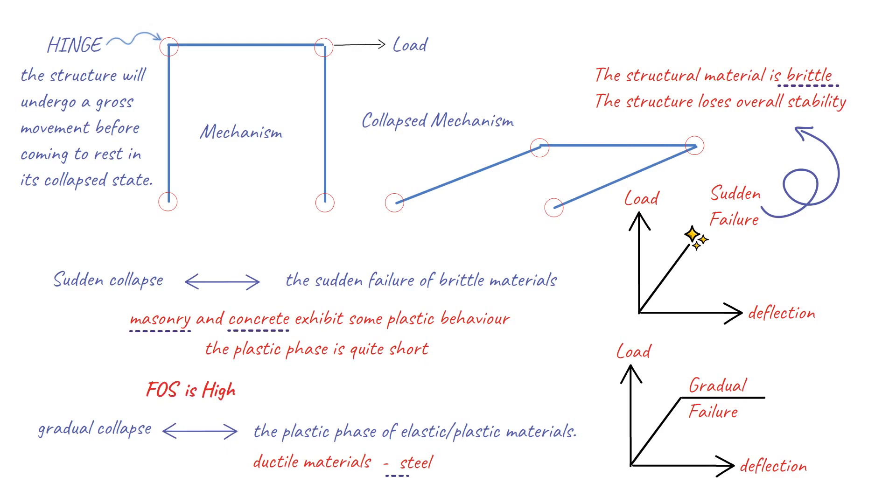Ductile metals such as steel can also become brittle. This can happen due to a very high number of repeated loadings or high loading rates at low temperatures.